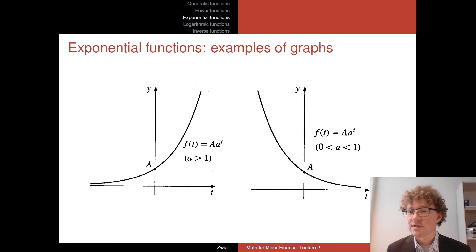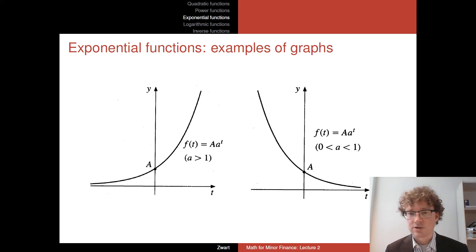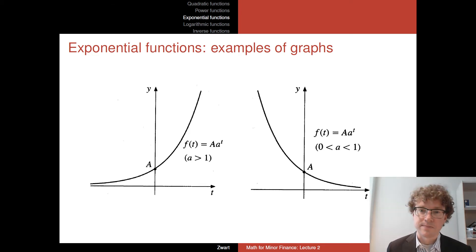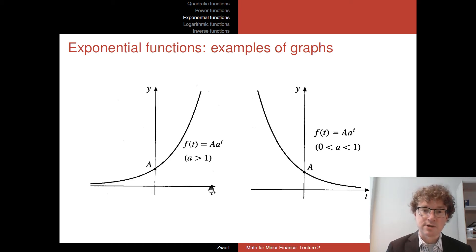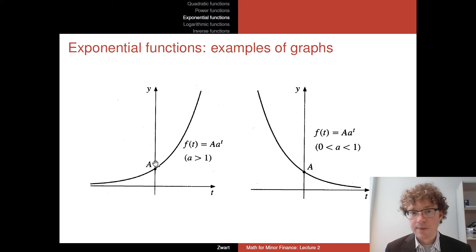Radioactivity is an example of exponential decline — the material gets halved every certain number of units, approaching but never reaching zero. When a is smaller than one, the function declines. The capital A scales the entire function up or down, and essentially equals the y-intercept — the value where the function crosses the y-axis at x equals zero.